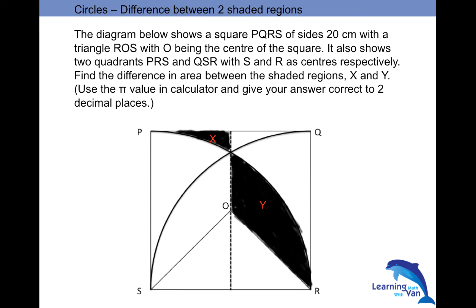Let's take a look at this question. The diagram below shows a square PQRS of sides 20 cm with a triangle ROS with O being the center of the square. It also shows two quadrants PRS and QSR with S and R as centers respectively. Find the difference in the area between the shaded regions X and Y. Use the pi value in calculator and give your answer correct to two decimal places.